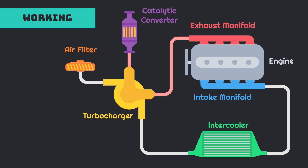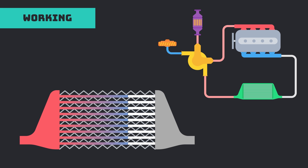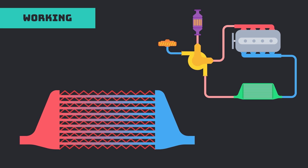Normally, the turbocharger compresses the intake air, which results in a higher temperature of the intake air. When this hot air passes through the intercooler, excess tubes absorb the heat and decrease the temperature of the air, which results in higher air density. The heat absorbed from the intake air is further supplied to the fins by the excess tubes.